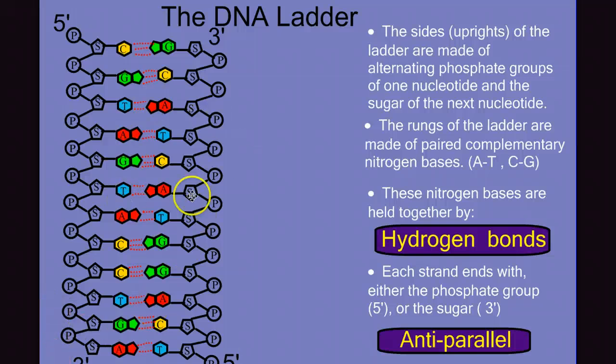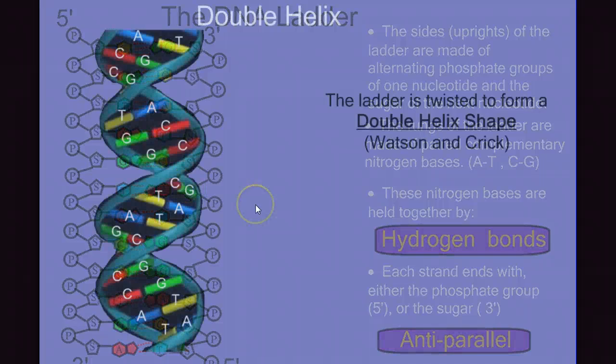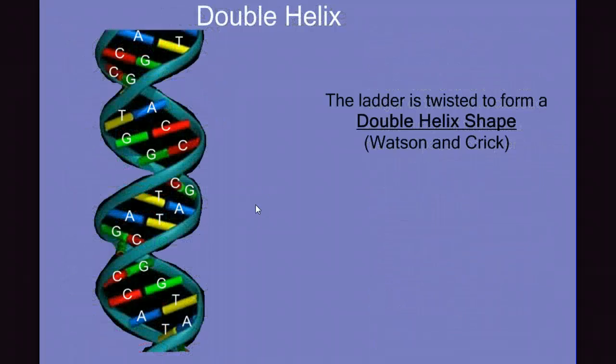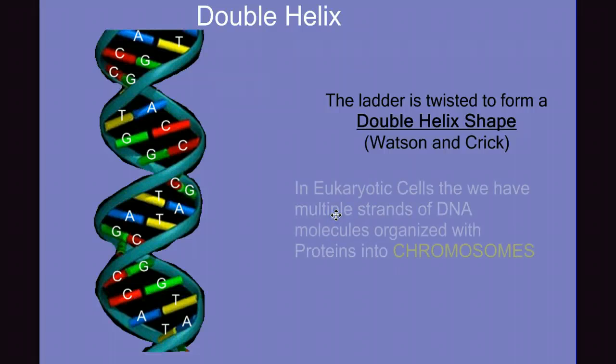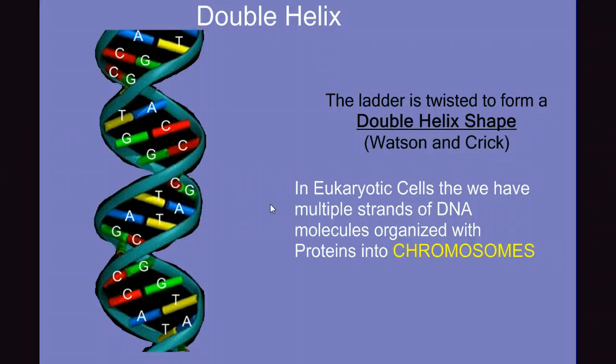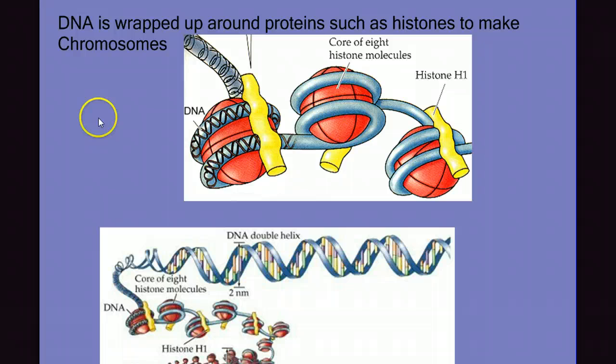But this is not the real shape of DNA. Instead, the molecule is twisted on itself in a form we call a double helix. In eukaryotic cells, we have multiple strands of DNA molecules organized with proteins in structures called chromosomes. So let's take a closer look at that structure.